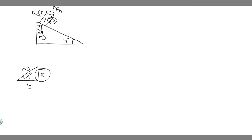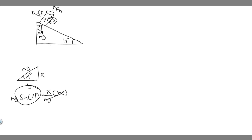We find each of these using trig. The sine of 14 degrees equals opposite over hypotenuse, so sine(14) = x / mg, which means the x component of the weight force is mg times sine(14). For the y component, we use cosine: cosine(14) = adjacent over hypotenuse = y / mg, so the y component of the weight force is mg times cosine(14).